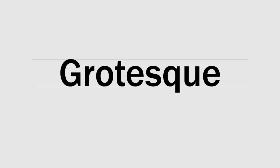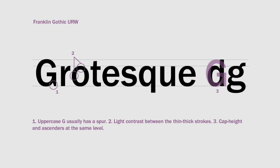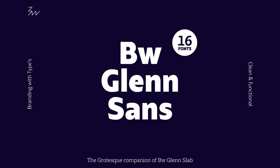First up is Grotesque. This style was the first commercially popular sans serif in the early 1900s. Some features include: the uppercase G usually has a spur, there is a slight contrast between thin and thick strokes, and the cap height and ascenders were usually at the same height. The most common characteristic is the bowl and loop on the lowercase g — also called a two-story g. An example of a grotesque font is BW Glenn Sans.